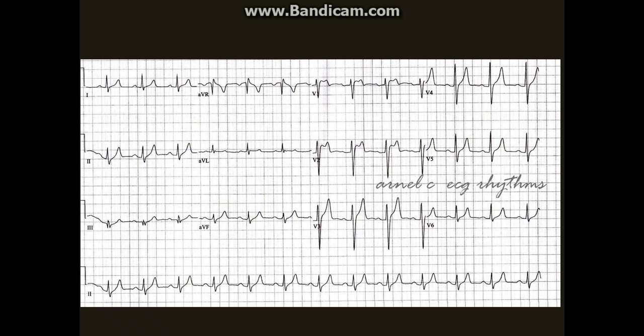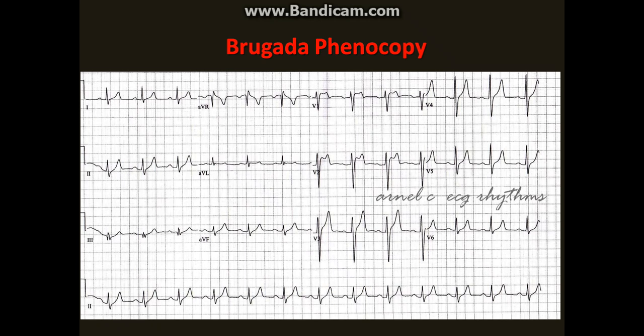The basic rhythm is sinus with ST elevation in V1 to V4. Peak T waves in V3 and V4 are seen. There is some PR depression, and there is a Brugada pattern. The cardiologist service felt this was probably not acute coronary syndrome, because as mentioned, chest pain had been present for two days.